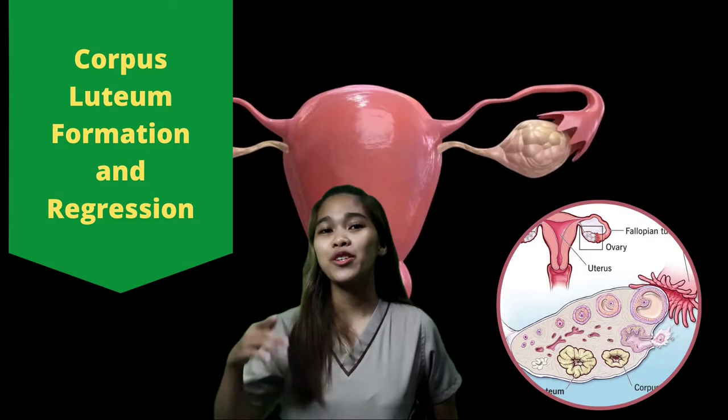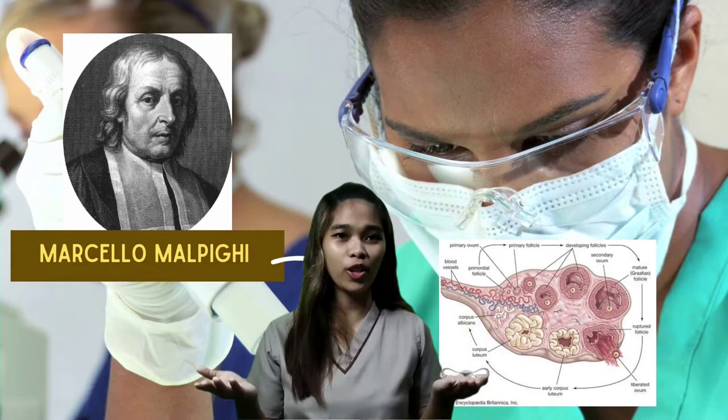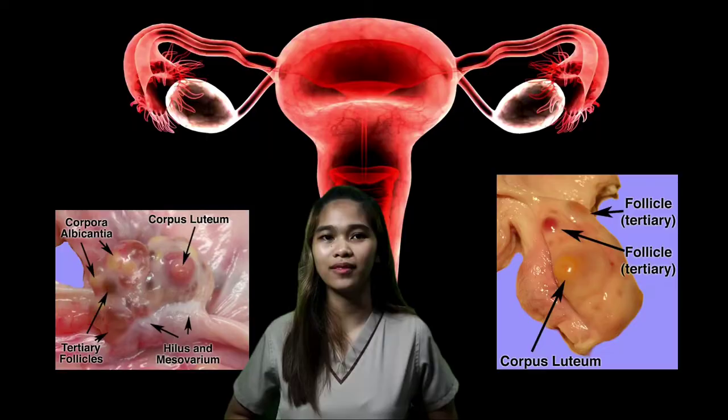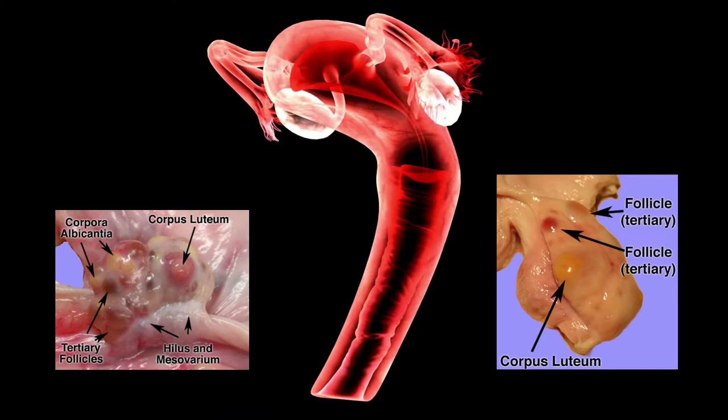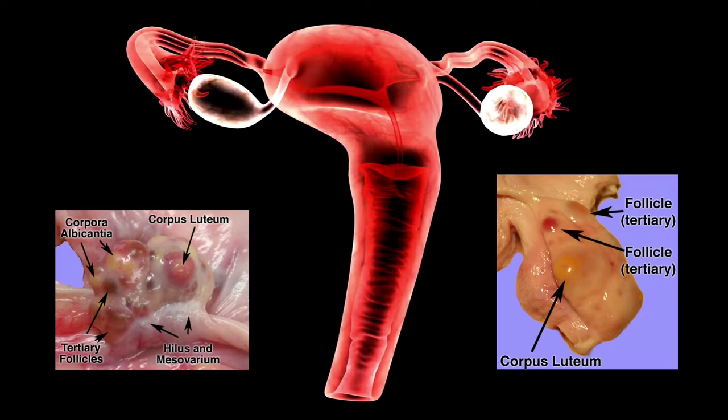Marcelo Malpighi first coined the term corpus luteum, or the yellow body, in 1681. The corpus luteum is remarkable in that it is critically important for reproduction in numerous species, but exists only as a transient structure that arises from the ovarian follicle after ovulation.